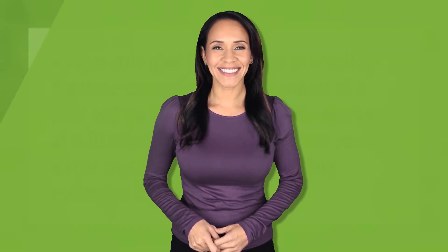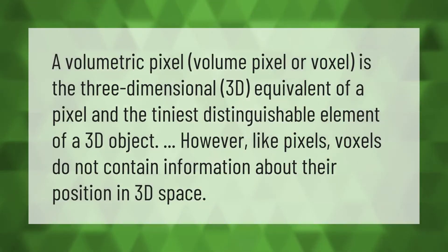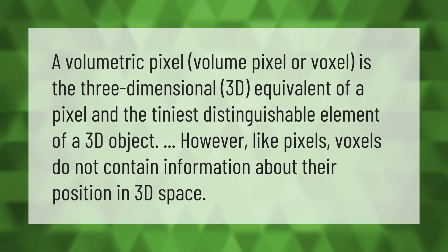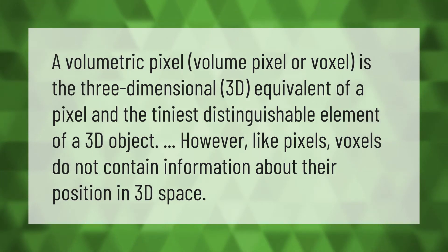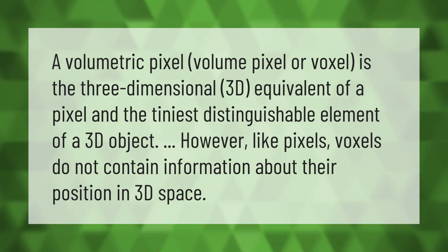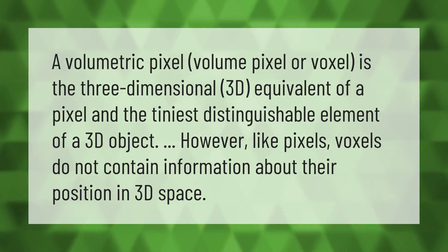A volumetric pixel, volume pixel, or voxel is the three-dimensional (3D) equivalent of a pixel and the tiniest distinguishable element of a 3D object. However, like pixels, voxels do not contain information about their position in 3D space.